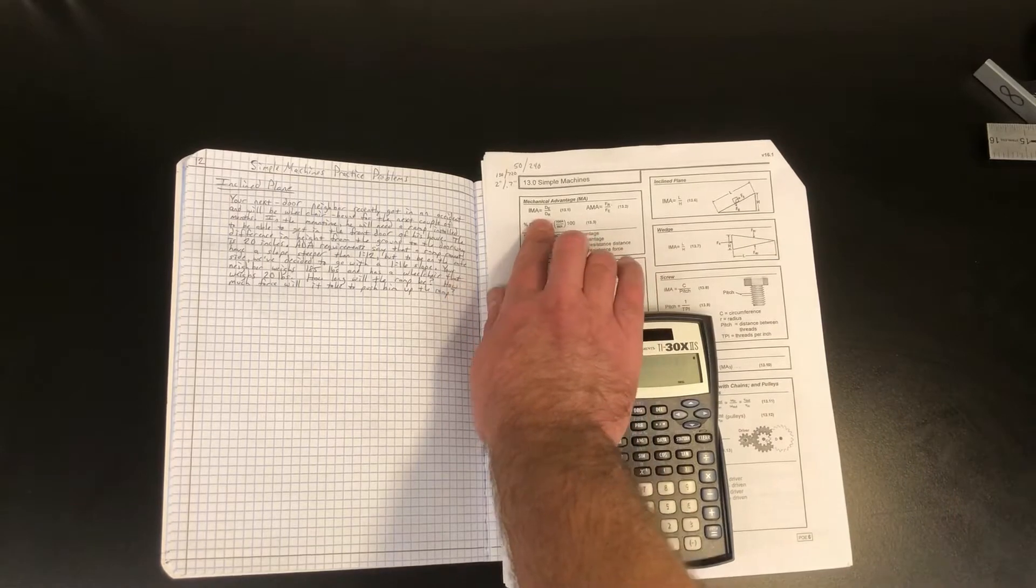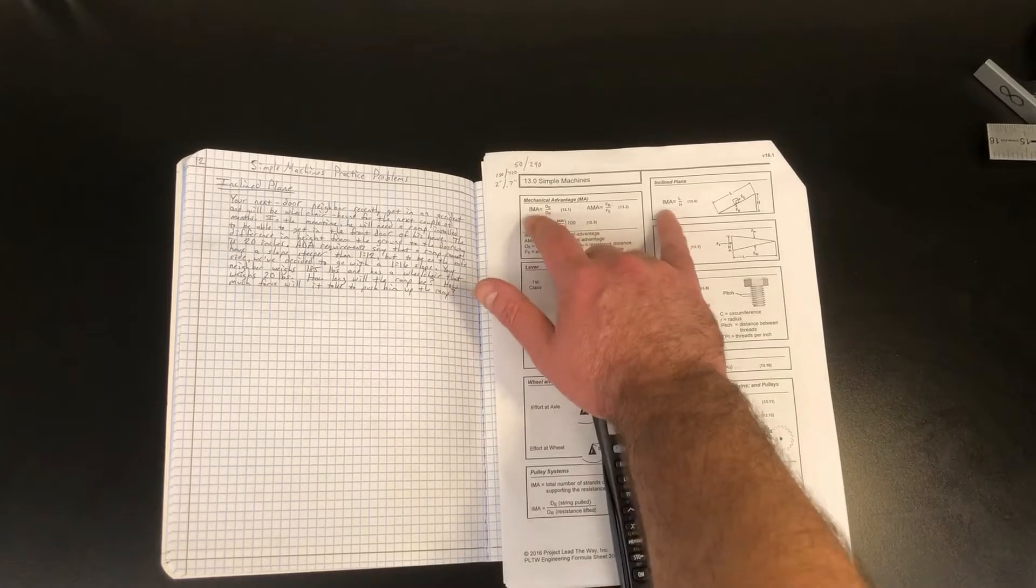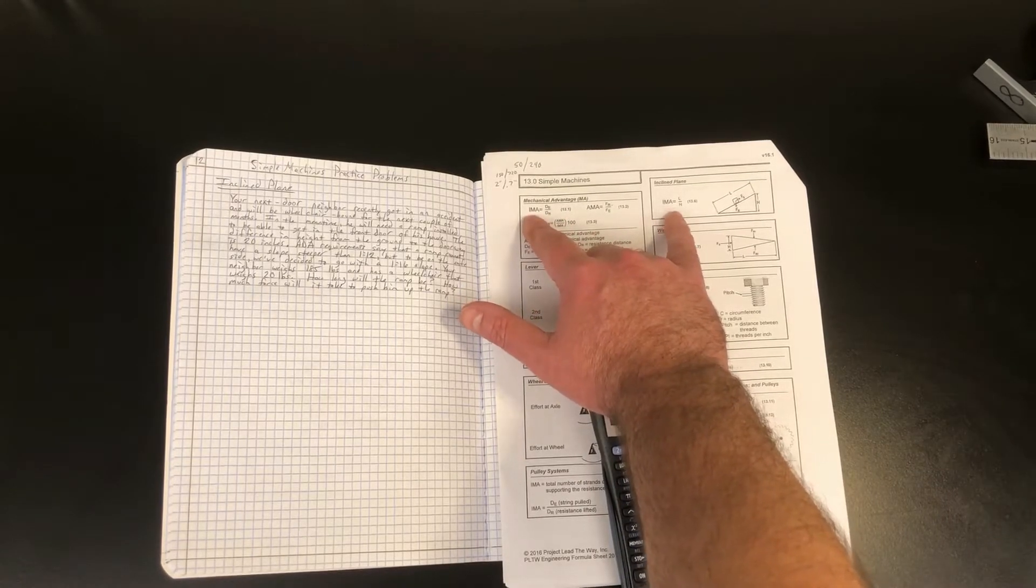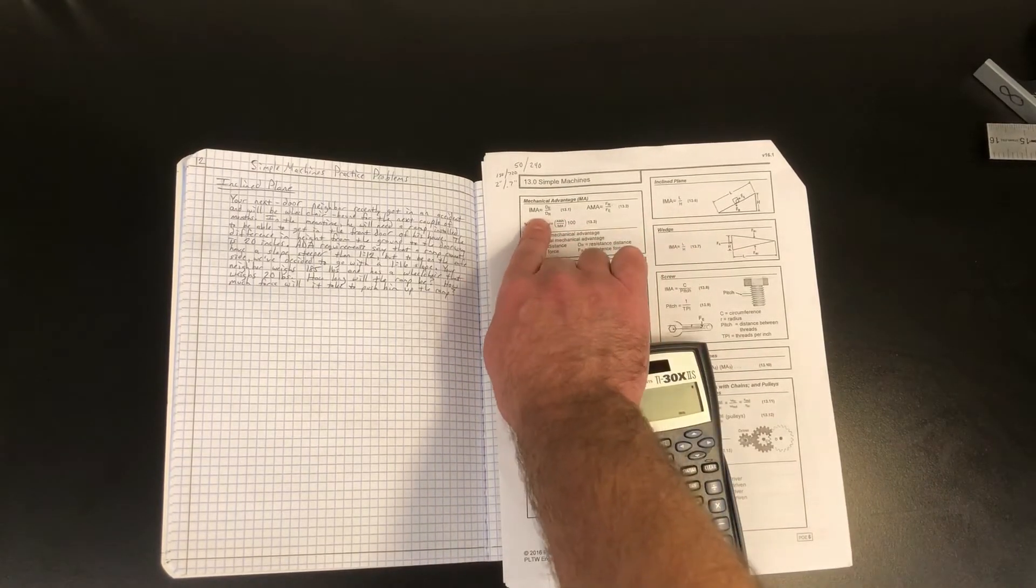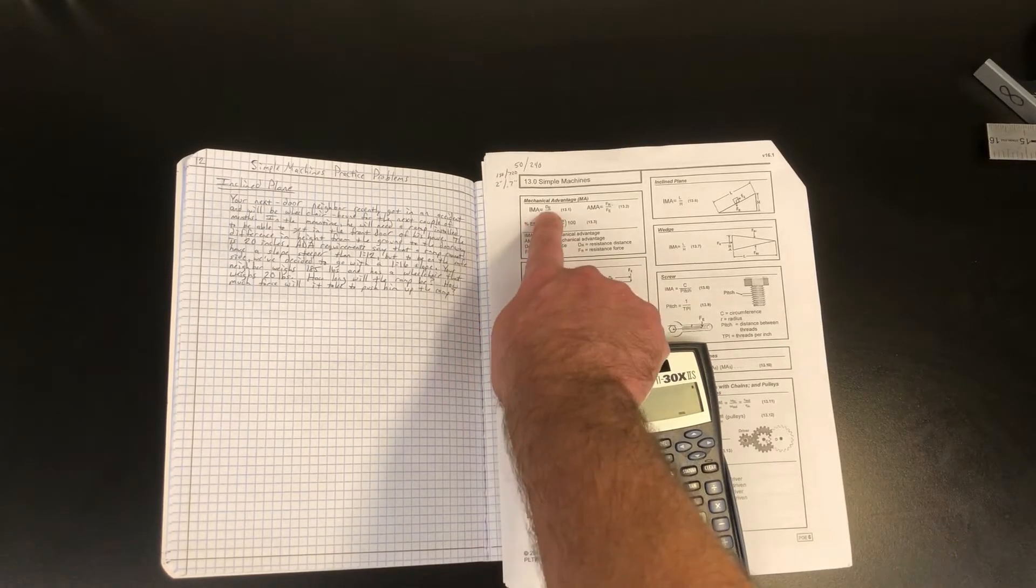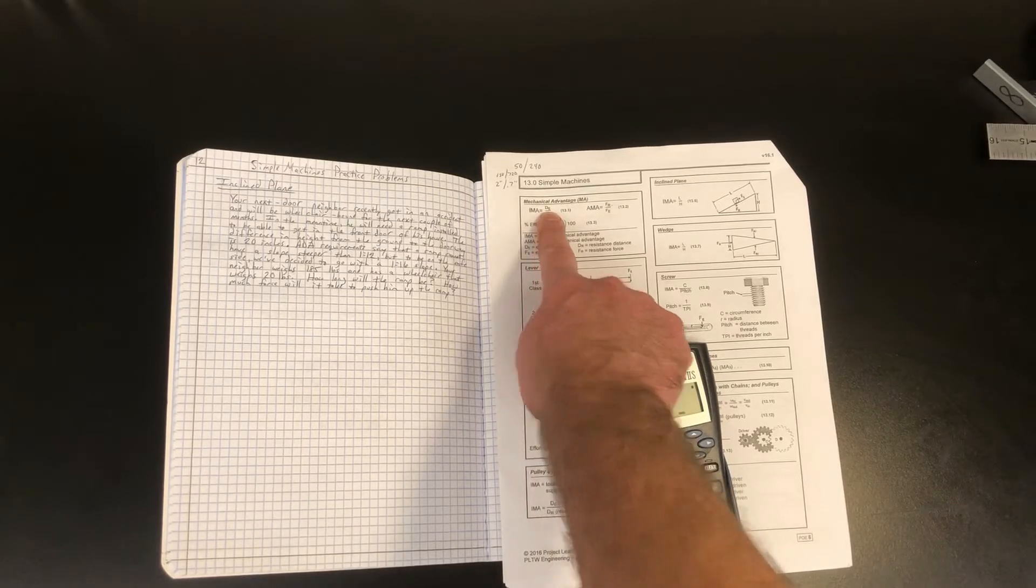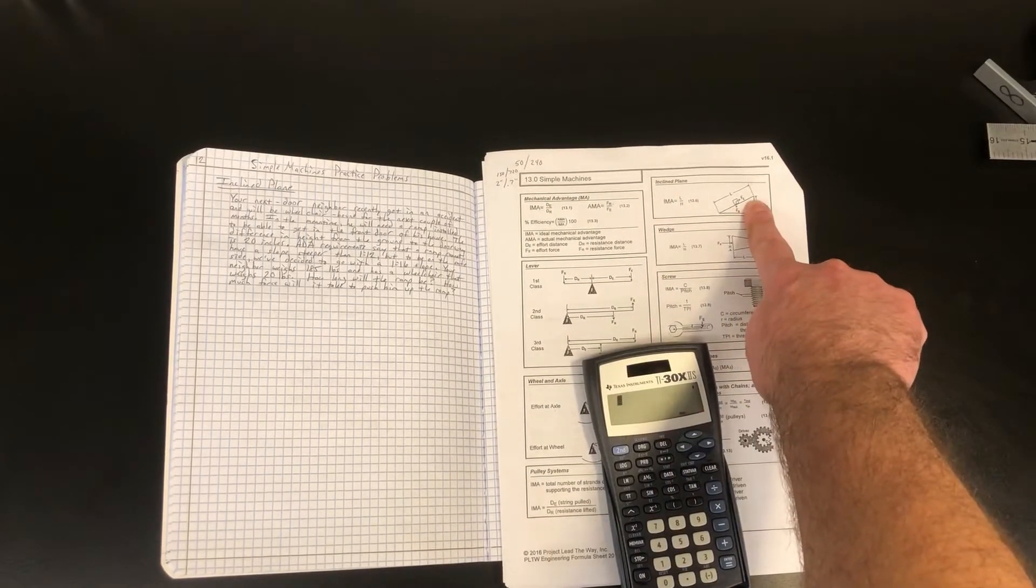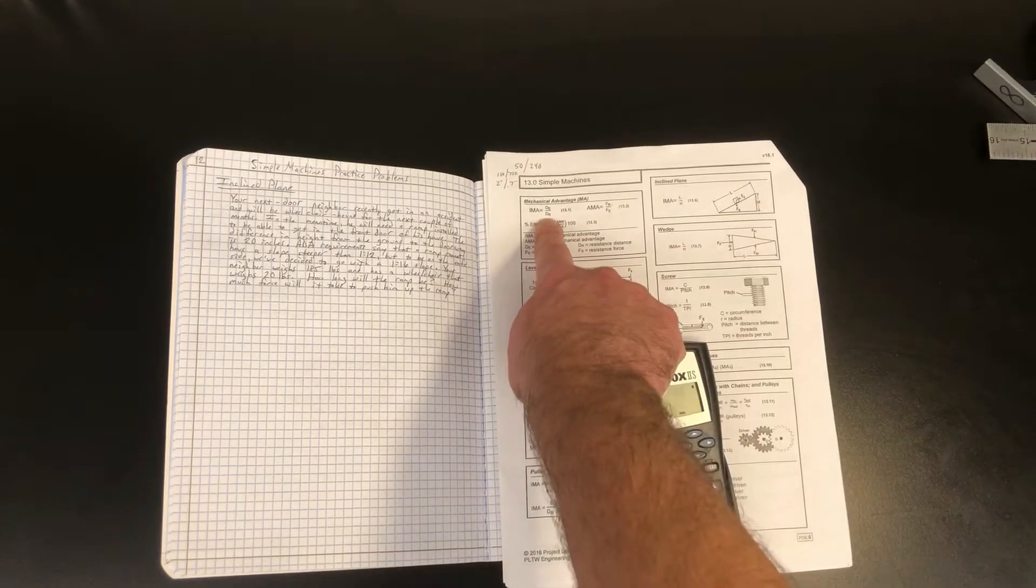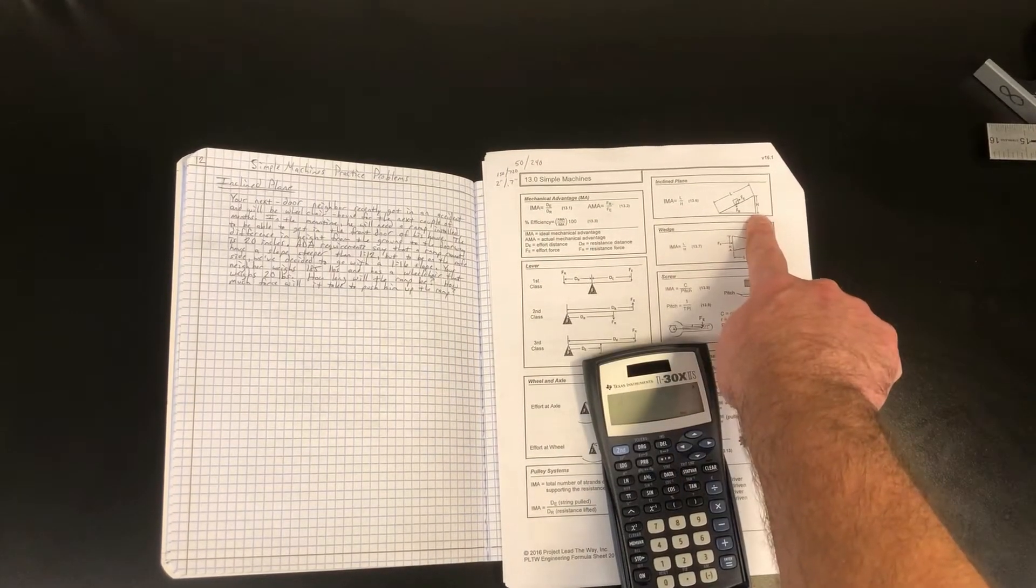IMA for all simple machines is effort distance over resistance distance. Since IMA of an incline plane is L over H, we know that effort distance of an incline plane is equal to L, or the length of the incline plane, and resistance distance of an incline plane is equal to H, or the height of the incline plane.